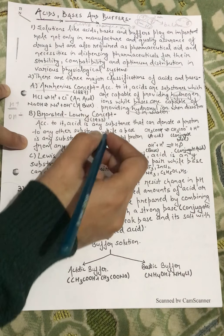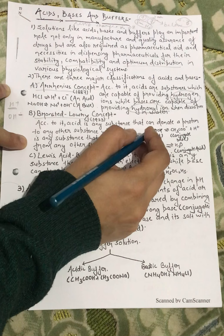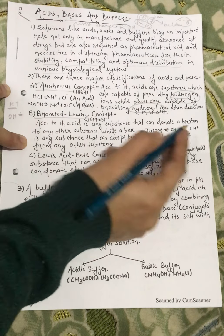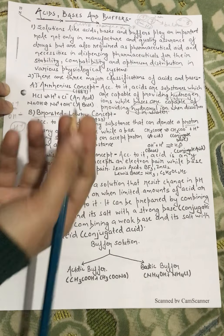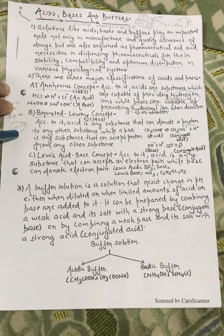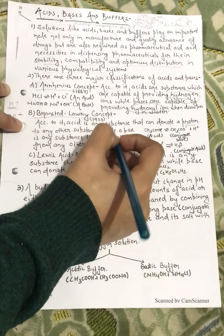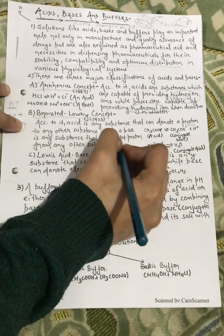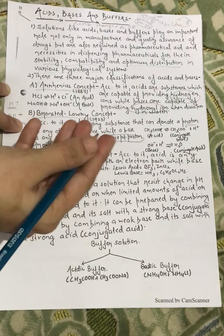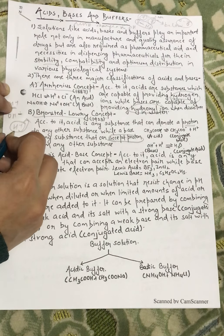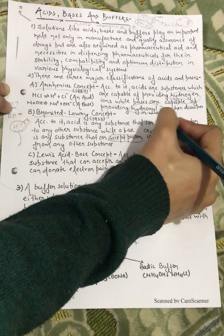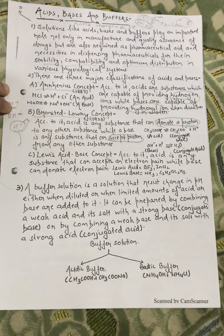Then we have the Bronsted-Lowry concept. An acid is any substance that can donate a proton — proton being the H-positive ion, that is the hydrogen ion. While a base is a substance that can accept a proton. So the acid is donating an H-positive ion and the base is accepting it.